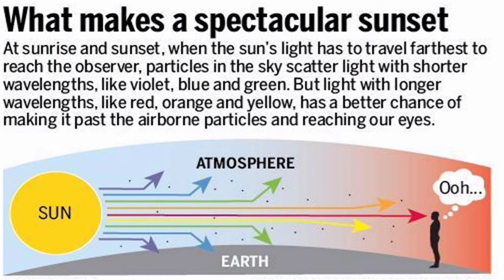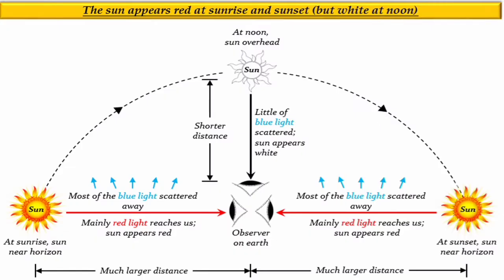Light of shorter wavelength is mostly scattered during this passage, and only the least scattered, that is the red light of longer wavelength, reaches the observer's eyes. As a result, the rising sun or setting sun appears to be reddish.